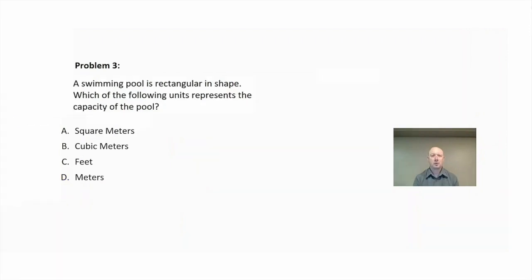Problem three: a swimming pool is rectangular in shape. Which of the following units represents the capacity of the pool? Is it A, square meters, B, cubic meters, C, feet, or D meters?